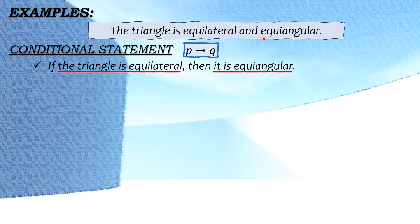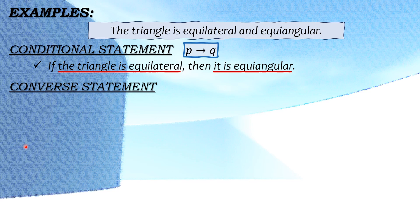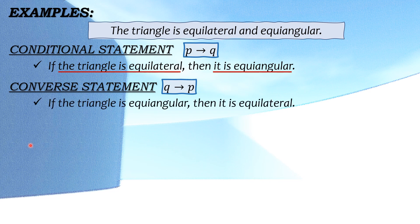Since ang natira lang dito after ng salitang 'and' ay 'equiangular', para makabuo tayo ng conclusion magdadagdag lang tayo ng pronoun ng ating given noun. Since isang bagay ang triangle, gumamit tayo ng pronoun na 'it'. Next naman is the converse statement or if Q, then P — pagpapalitin lang natin yung posisyon ng hypothesis at ng conclusion. Palagi kung nasa unahan ang noun, so ang converse statement natin ay magiging: if the triangle is equiangular, then it is equilateral.